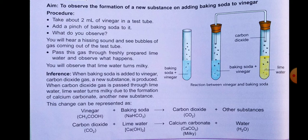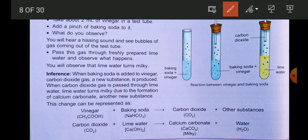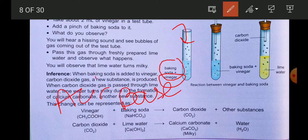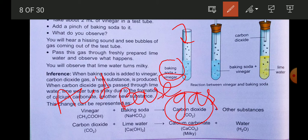In the third activity, take baking soda and pour it into a vinegar solution. Vinegar is an acidic solution, and baking soda is a base, as you studied in the chapter on Acids, Bases and Salts. When vinegar and baking soda react, a gas is formed — that gas is carbon dioxide (CO2). To identify whether the gas produced is CO2, you can use lime water.